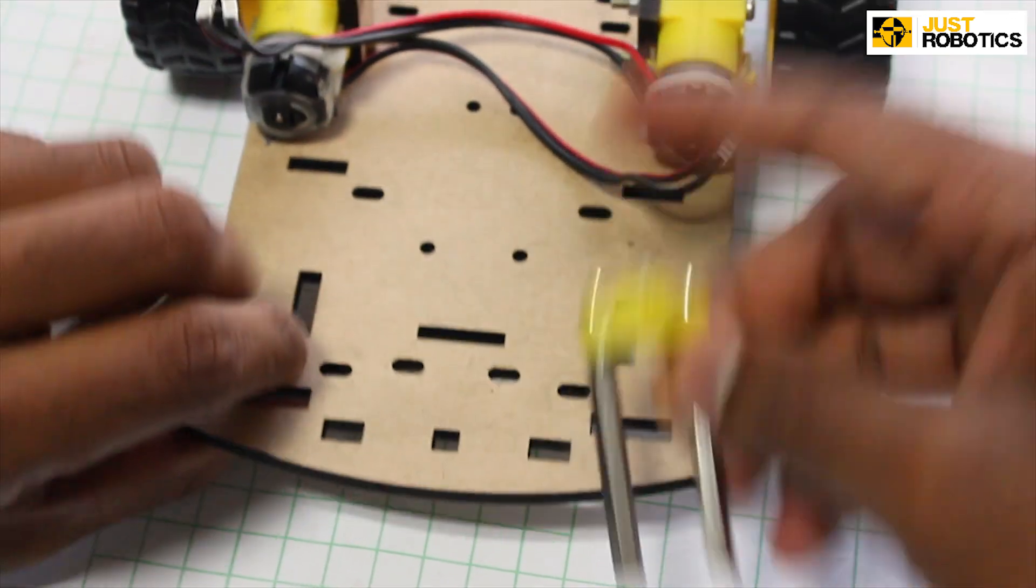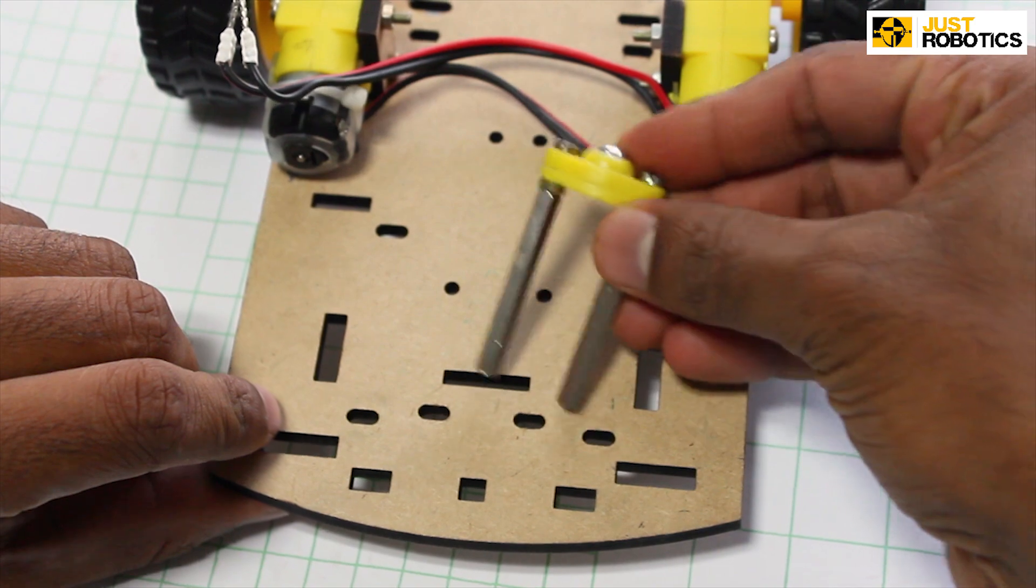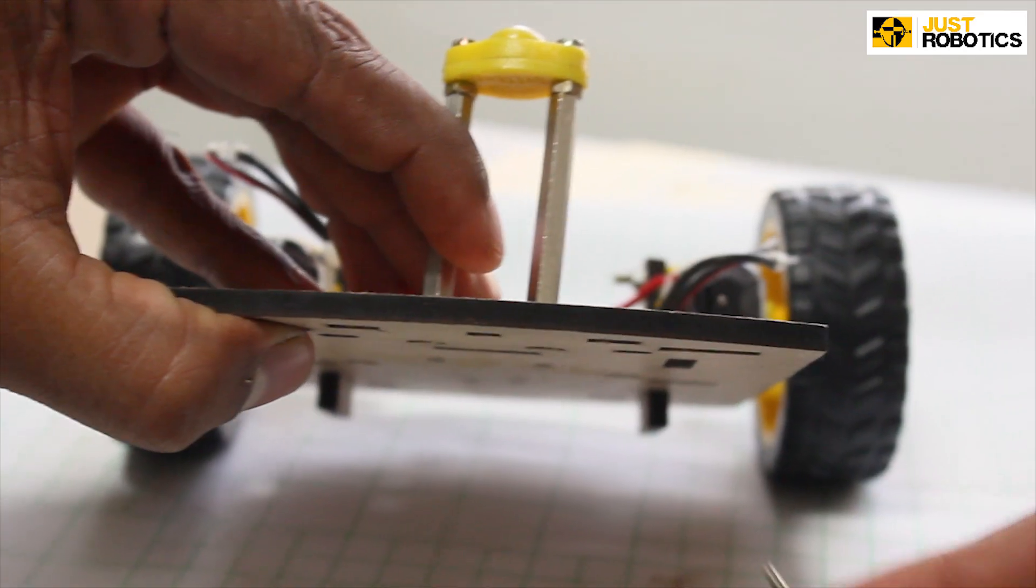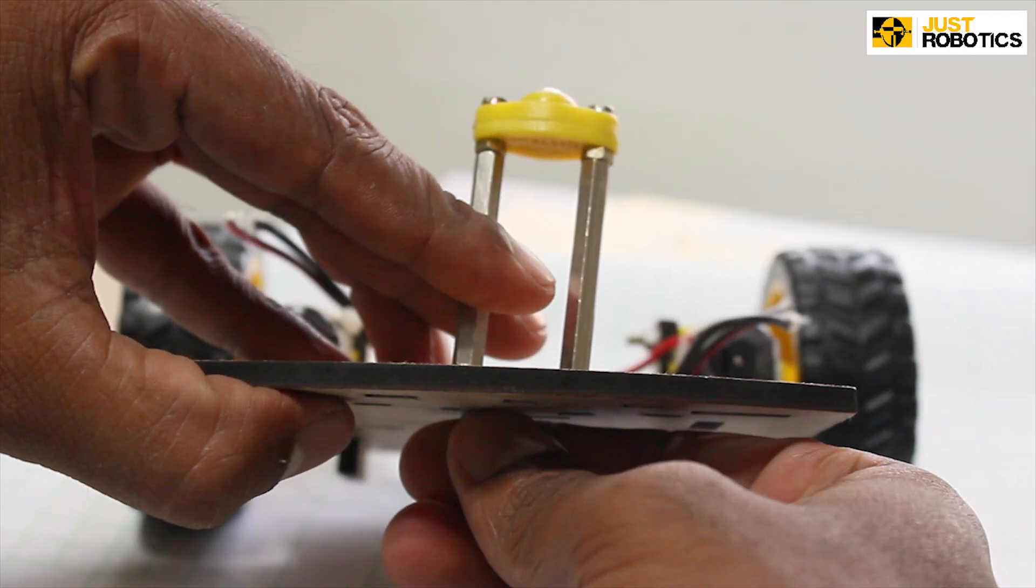Now take the spacer and caster wheel and you can see two slots provided on the chassis. Now hold it there in position and attach it with the help of screws.